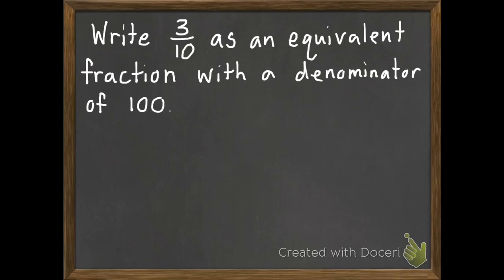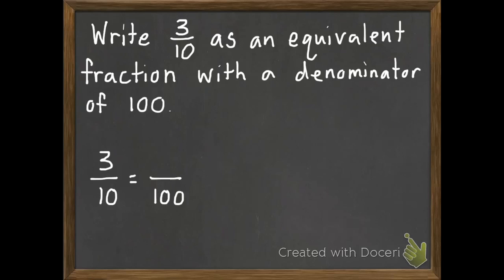Our instructions here say: write 3 tenths as an equivalent fraction with a denominator of 100. So instead of tenths, we want to turn this into hundredths. Here's our original fraction of 3 tenths, and I want to make it an equivalent fraction of hundredths. So what did I have to do to my tenths to turn it into hundredths? One hundred is bigger than ten, so I know I had to multiply.